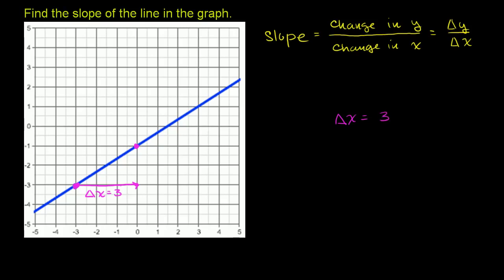And what's my change in y? My change in y, I'm going from negative 3 up to negative 1. Or you could just say 1, 2. So my change in y is equal to positive 2. Change in y is equal to 2. So what is my change in y for a change in x? When my change in x was 3, my change in y is 2. So this is my slope.